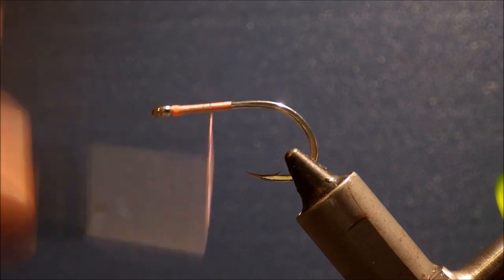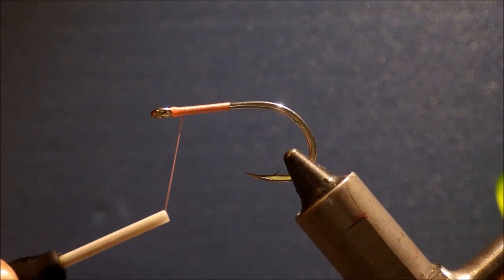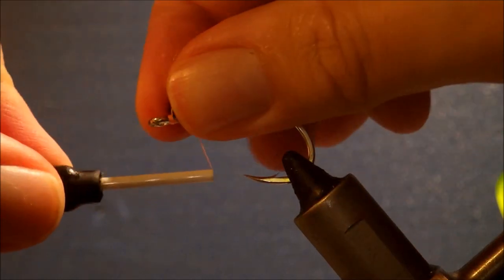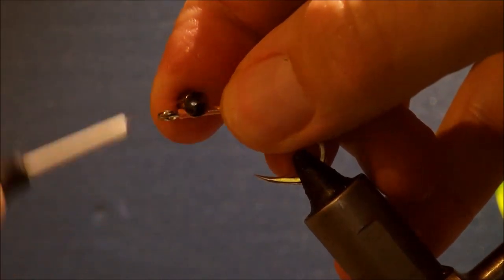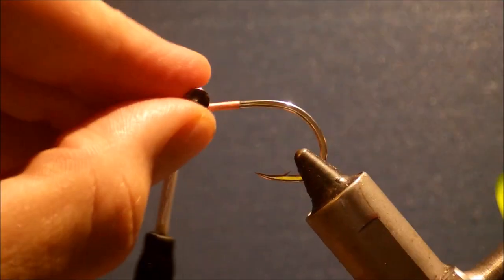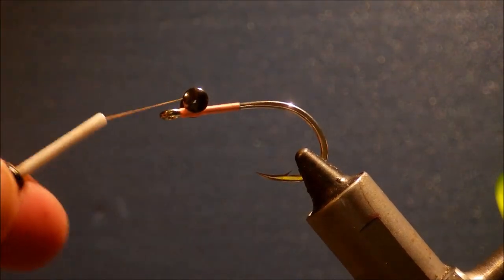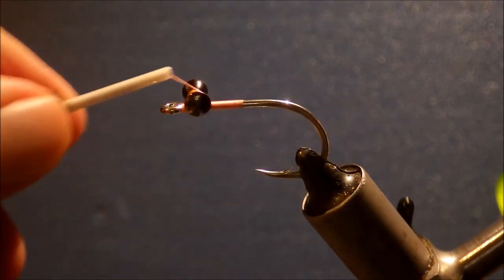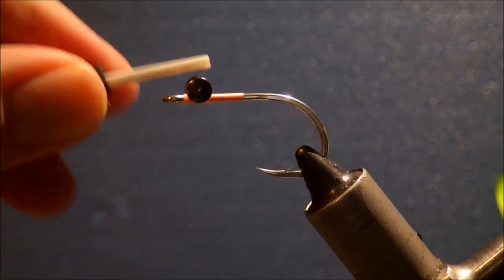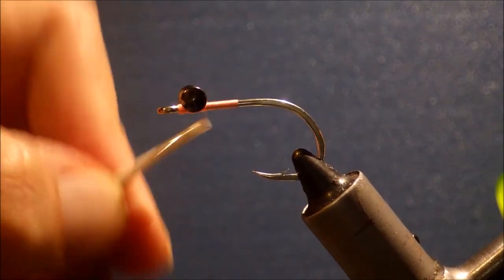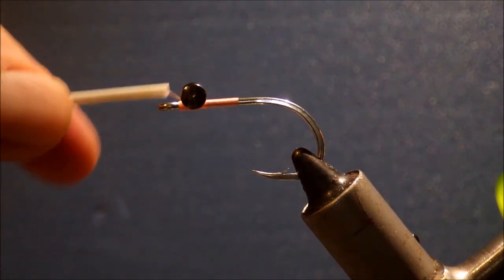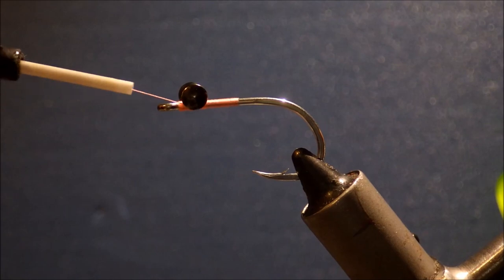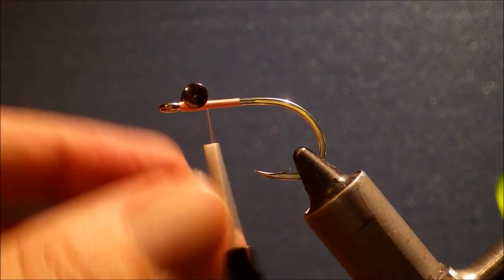I'm going to tie in my weight which is just a pair of dumbbell eyes. And I'm leaving a bit of room so that I can put a guard on this later. Just make sure the eyes are seated nice and square and level. And then take some wraps over the eyes and under the shank and then under the eyes and over the shank or between the eyes and the shank just to tighten everything up and lock it all in place.